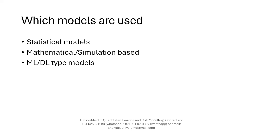Models can also be more mathematics-driven — less data but more math-theory driven — such as derivative pricing models using stochastic calculus. There you use some statistics, but mostly it's theory-driven mathematical models, and you also use Monte Carlo simulations. The third type could be machine learning or deep learning models, where you focus primarily on predictions, cross-validation, and using alternate data to improve model performance.